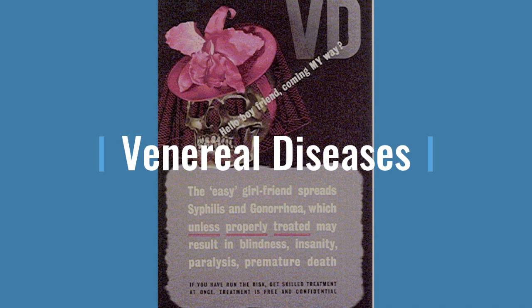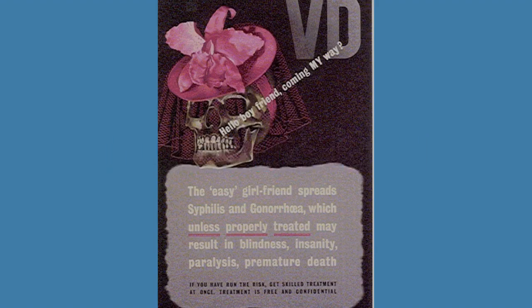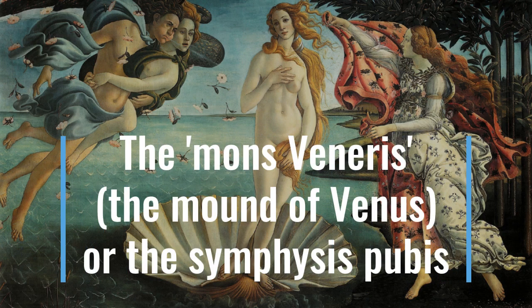An earlier abbreviation than STD is VD — venereal diseases. But even if you look at this postcard from the Imperial War Museum, you'll see how women get the blame for this. That's why there's been an international shift away from the term venereal diseases, because the word venereal itself comes from the mons veneris — the mountain of Venus — which is the symphysis pubis in a female. This is why women have traditionally been blamed for the spread of sexual infections, and hence we no longer use the term venereal diseases.